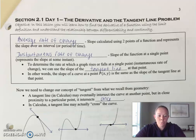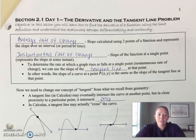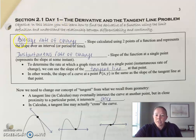Hello, this is section 2.1, day one, and we'll start our conversation with the derivative and the tangent line problem. We're going to focus on the definition of the derivative and what a derivative is. To start off with, average rate of change is just the slope calculated between two points of a function.